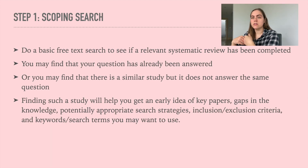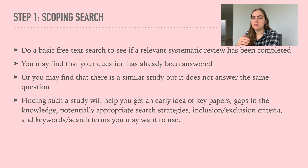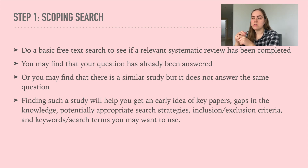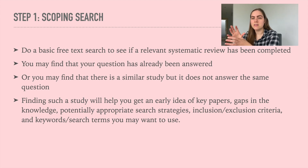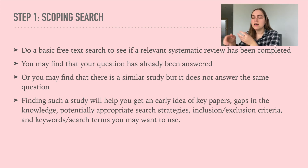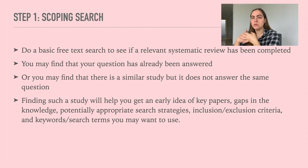The first step is doing a scoping search — a free-text search to understand whether a similar systematic review has already been completed. We're going to talk about some systematic review steps that you can implement for your literature review. The first step is determining if your question has already been answered. Finding similar systematic reviews will help you get an early idea of the key papers in your field, the gaps in knowledge, the best search strategies, inclusion/exclusion criteria, and what keywords or search terms might be useful.